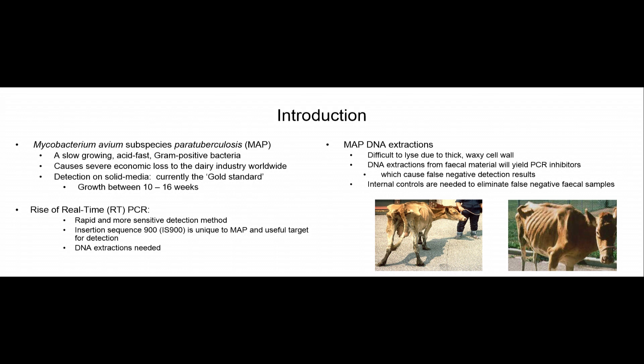The rise of real-time PCR is coming as well. It's a more rapid, more sensitive detection method, and the actual detection is for insertion sequence 900 — IS900 — and it's actually unique to MAP. It has about 14 to 20 copies in the MAP genome, and therefore it's a very useful target for detection. For MAP K10, it has 17 copies in the genome.